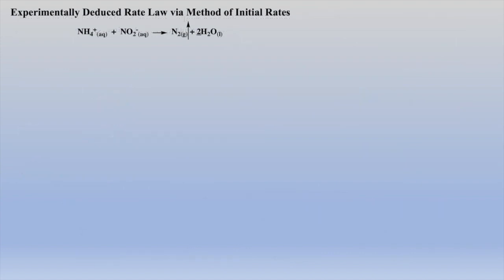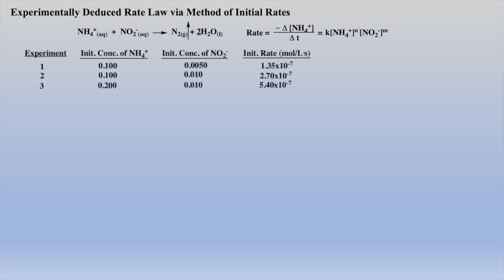The rest of this review video will focus on experimentally deducing the rate law via the method of initial rates. In this example, our goal will be to experimentally determine the rate constant K and the order of each reactant, N and M. This will be accomplished by examining the data of three different experiments. Within the data, one can see that concentrations of reactants were changed so that the experimentalist can determine how the initial rates were affected.